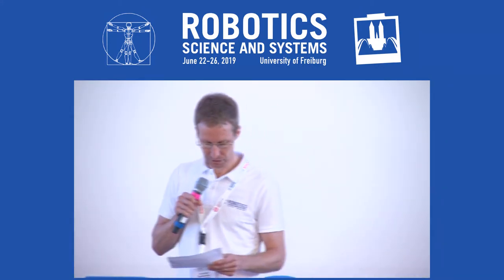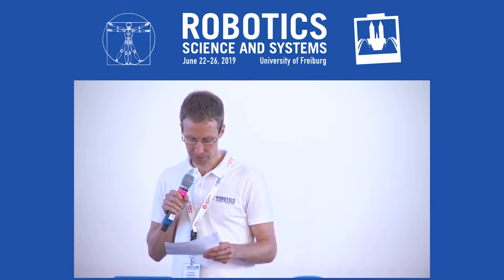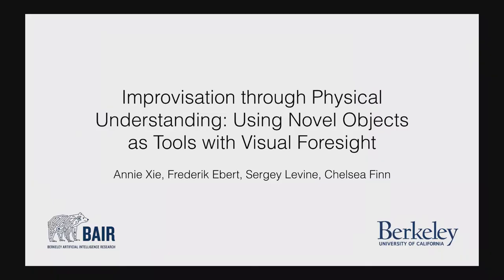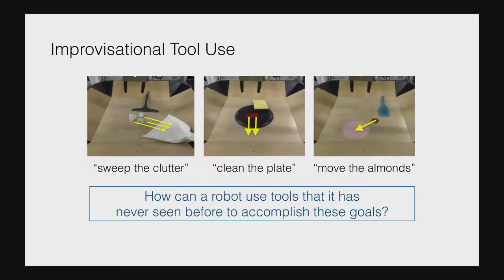The fourth talk is 'Improvisation through Physical Understanding: Using Novel Objects as Tools with Visual Foresight' by Annie Schier, Frederick Ebert, Sergey Levine, and Chelsea Finn. Recent advances in robot learning have enabled robots to master challenging skills and generalize to new scenarios and goals, but many approaches can only do one or the other. Learning from demonstrations can learn difficult skills but in narrow settings, while predictive model approaches can learn simple skills in very general settings — so we ask: how can we achieve both?